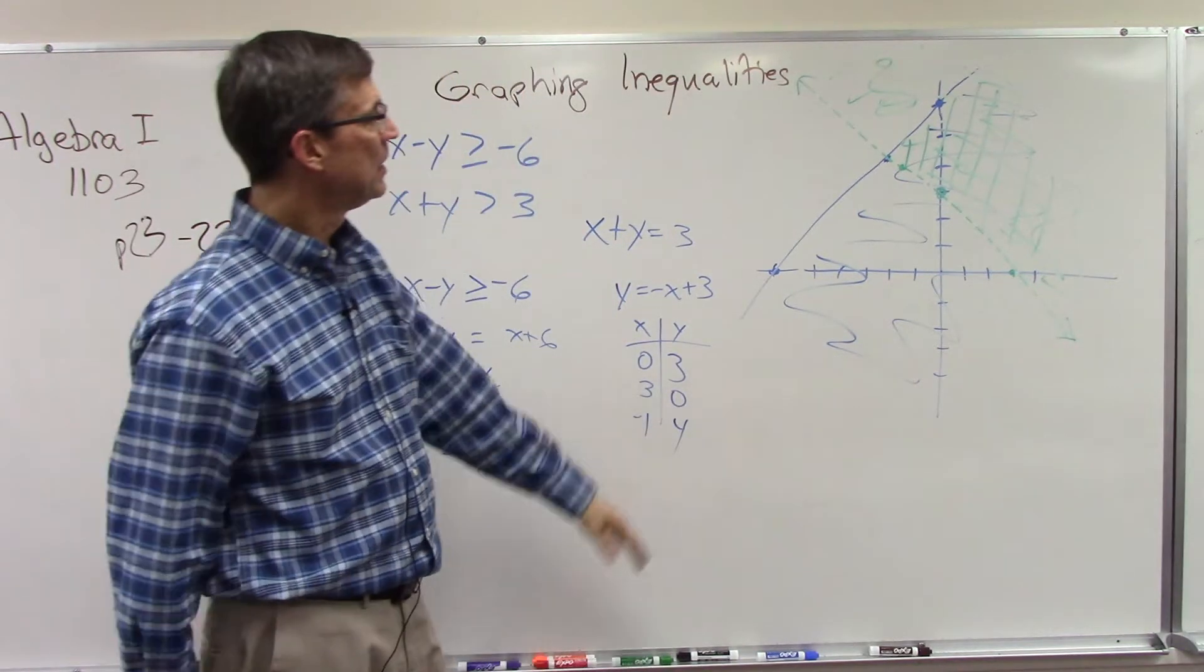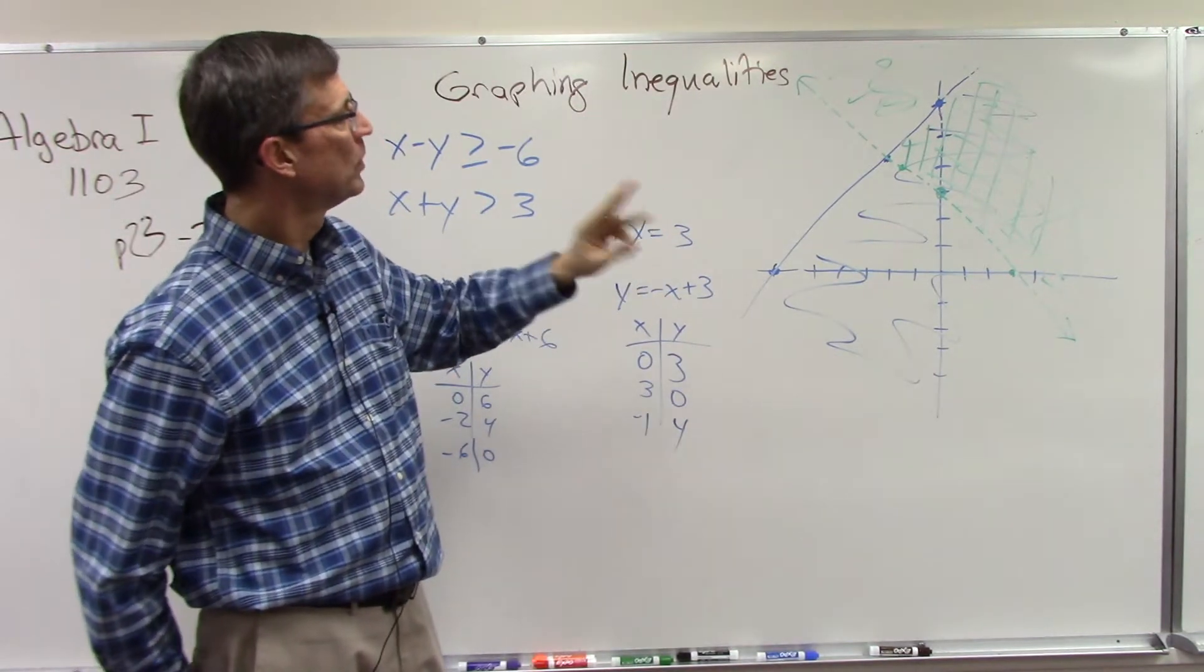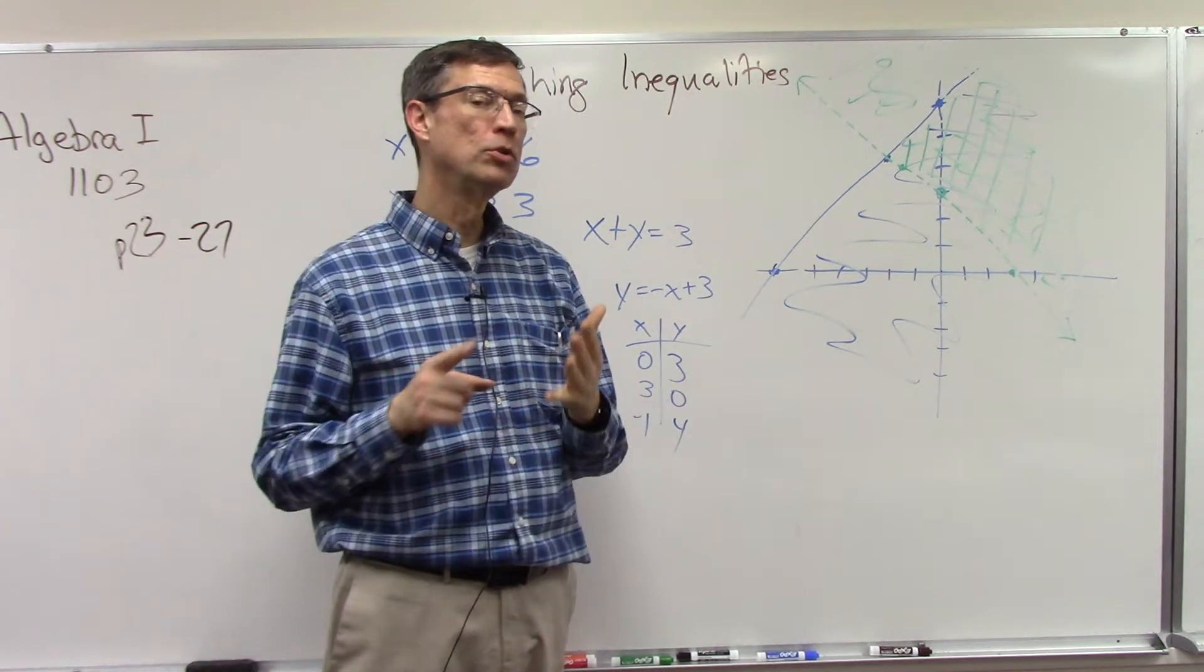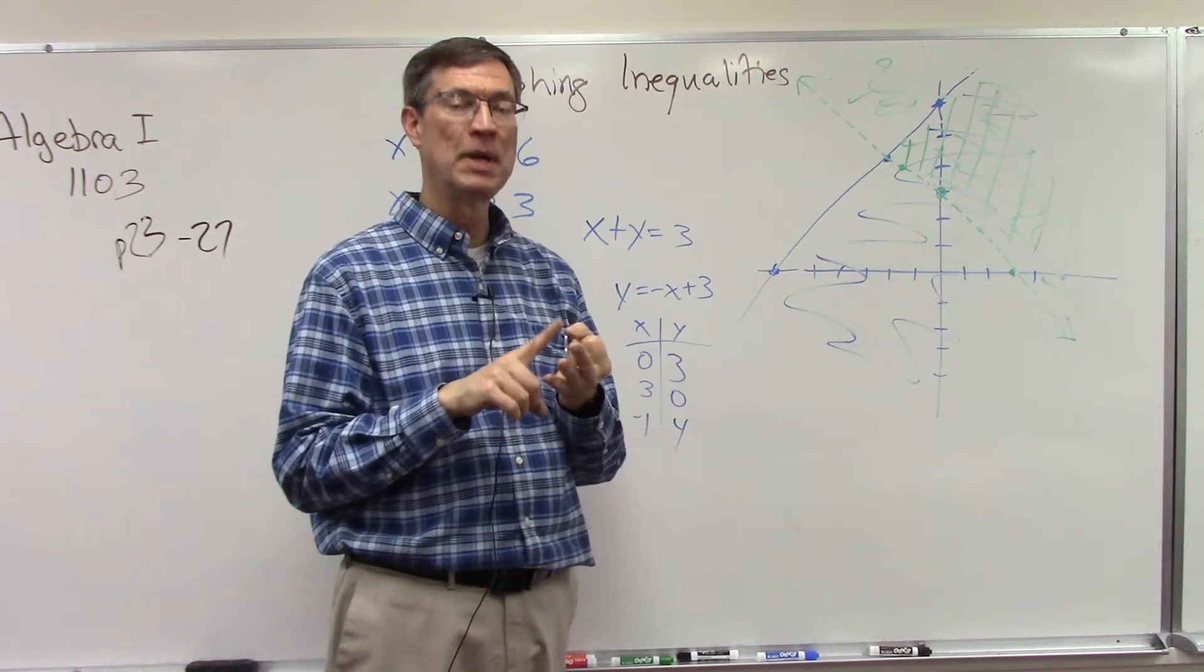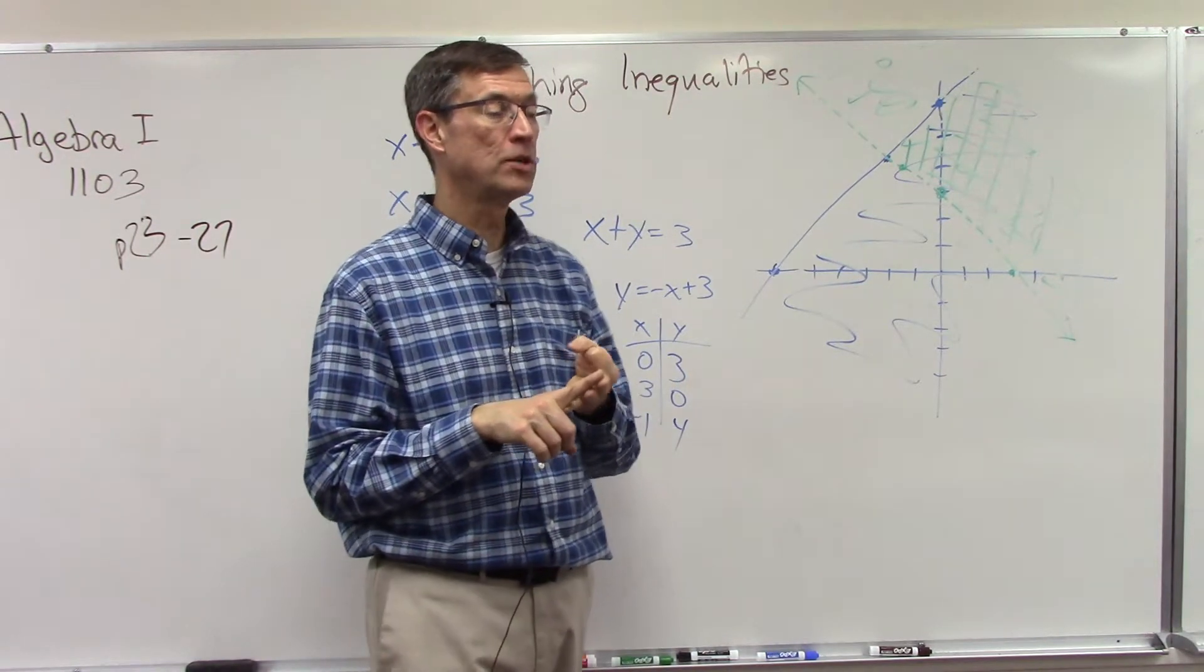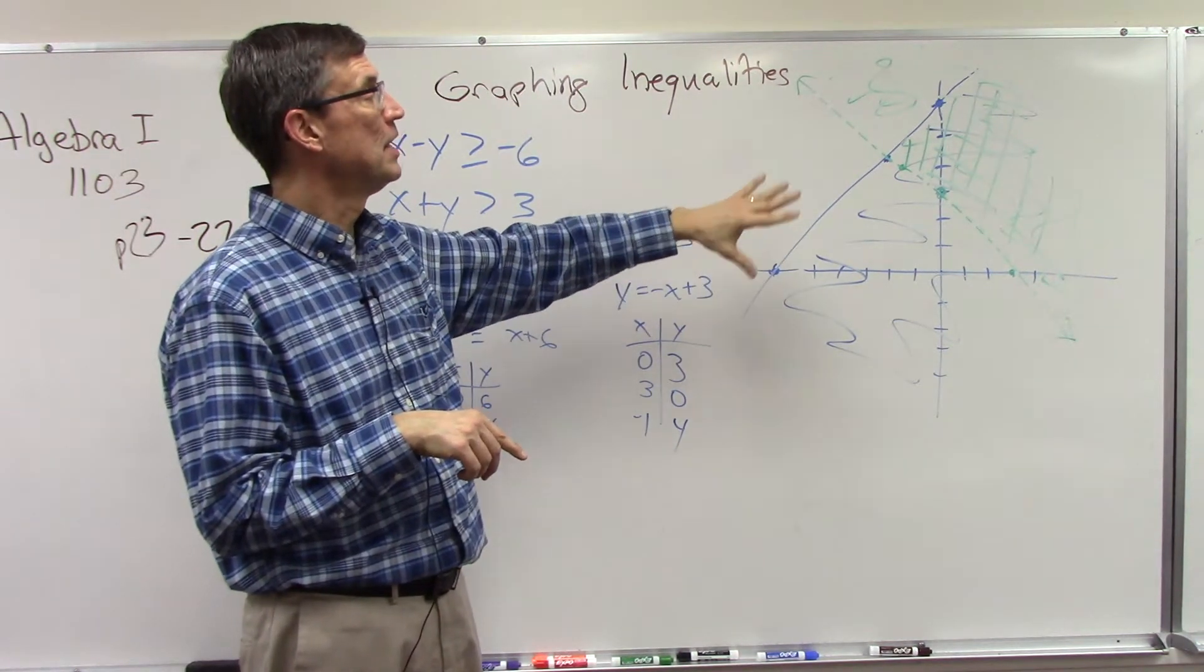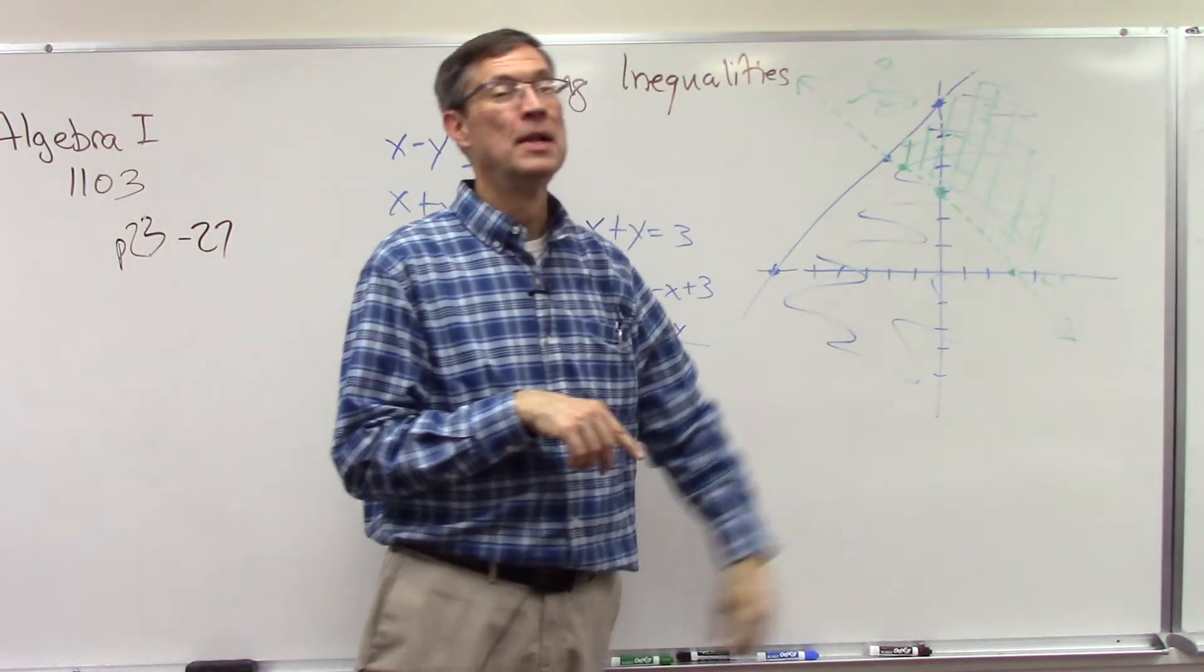In the first section with those three problems, you're just doing one problem at a time, graphing it, you're just shading. When you go to score it, make sure you look if you have the line the correct direction, if it's shaded on the correct side, and whether you made it solid or dotted line. Then when you move on to the next section, that's where we're doing the equations simultaneously. You do both of these graphs on the same graph and see where they overlap.